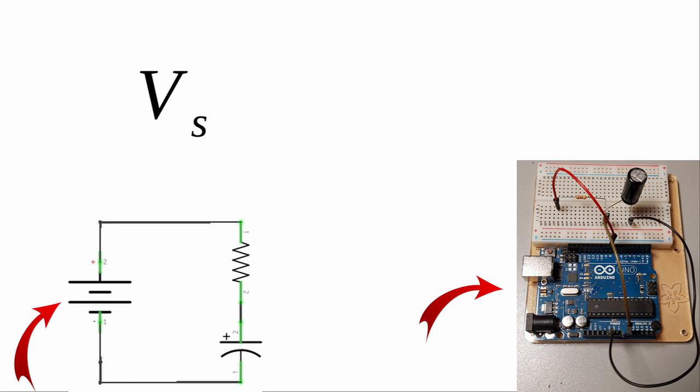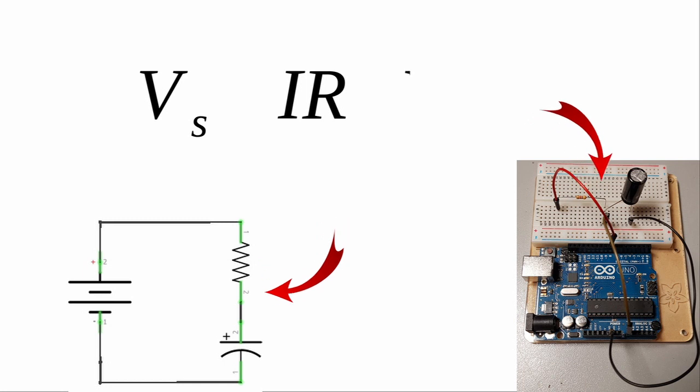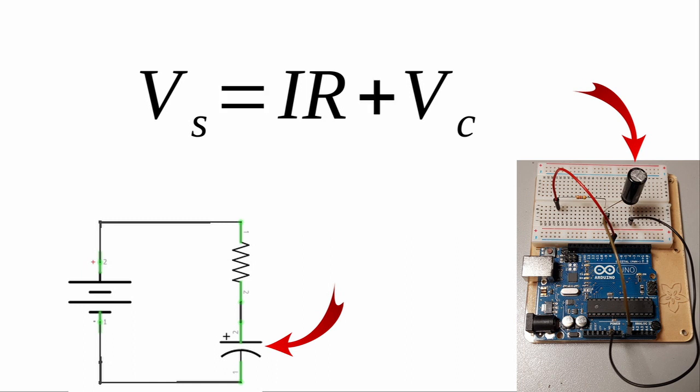For the charging case, we have three components in the circuit. The first is the Arduino which outputs a DC voltage at Vs volts, S for source. The second component is the resistor which causes a voltage drop equal to the current flowing through it I times its resistance R. The last component is the capacitor which causes some voltage drop Vc. Using Kirchhoff's loop rule, we obtain the equation Vs is equal to IR plus Vc.